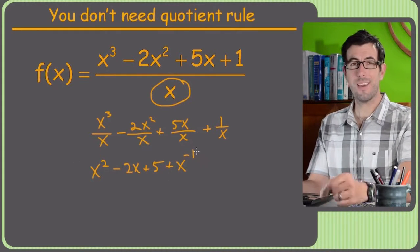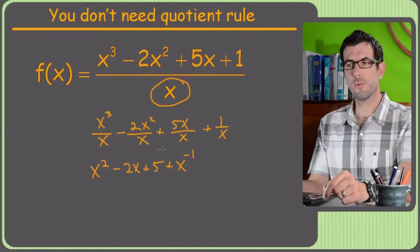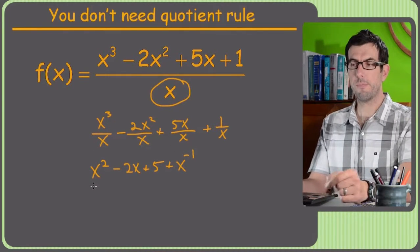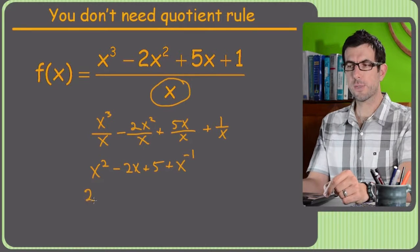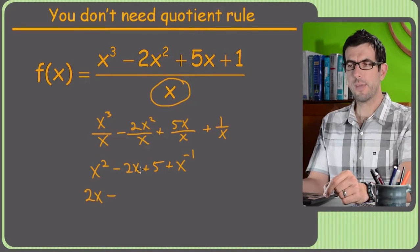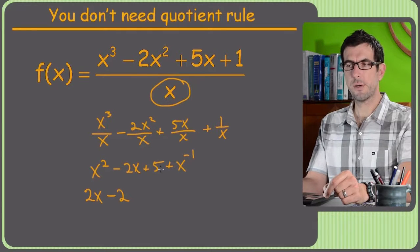Again, x to the negative 1, not the nicest thing I've ever seen, but at least it's not the quotient rule. And now I can use the power rule on these real easy. Derivative of x squared is 2x. Derivative of negative 2x is negative 2. Derivative of 5 is 0.